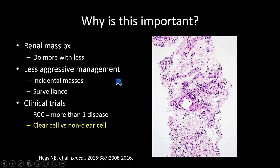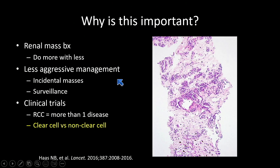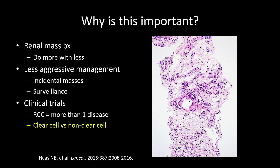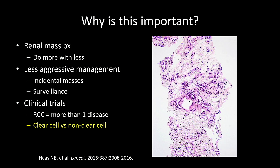What's important about renal tumor pathology? Nowadays we might be asked to do more with less — we might be asked to diagnose renal mass biopsies more regularly, or perhaps biopsies from metastatic sites of renal cancer. And it may be tricky with just a very small visualization of the tumor.